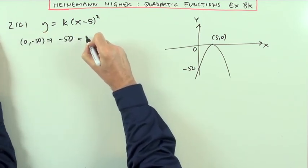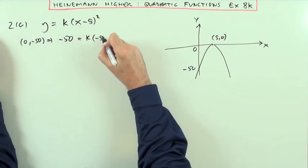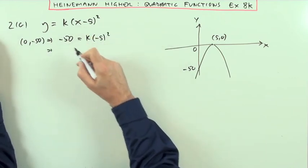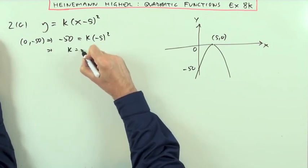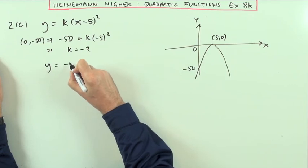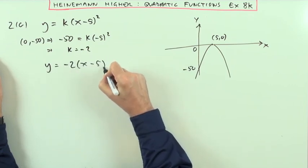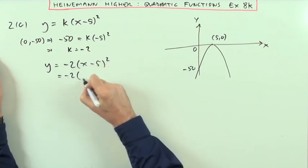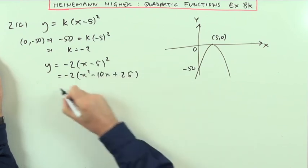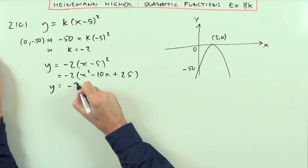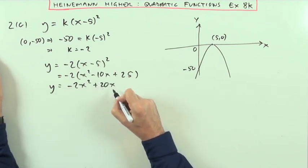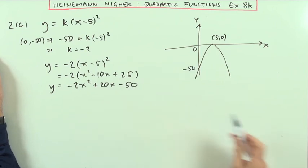That means negative 50 equals K times negative 5 squared, so negative 50 equals 25K, which gives K equals negative 2. So the equation is Y equals negative 2 times (X minus 5) squared, which is negative 2 times (X squared minus 10X plus 25). Finally, Y equals negative 2X squared plus 20X minus 50.